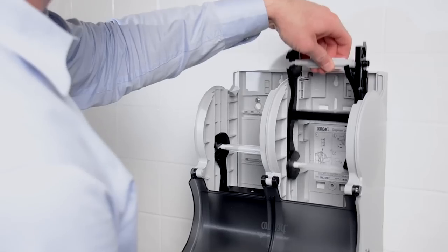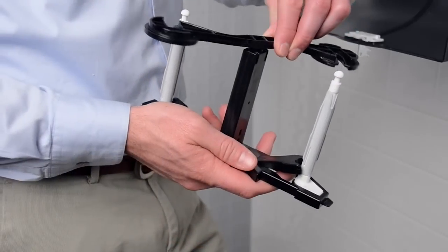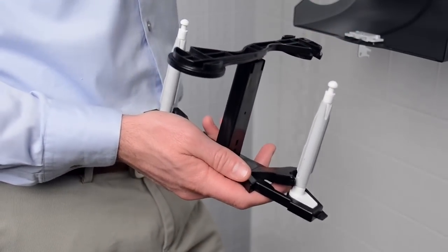Next, remove the mandrel, the middle section of the dispenser where the tissue will be loaded. Open it and load two full rolls.